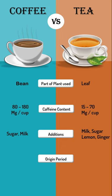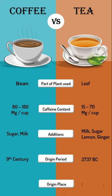Origin point: tea dates to 2737 BC, and coffee to the 9th century. The last point is origin place: tea originated in India and China, and coffee originated in Yemen.